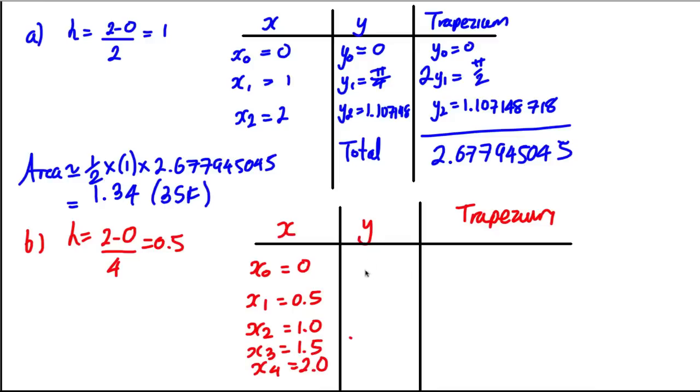So our y, in this case, is going to be y0 is going to be 0, as it was up here. And this one is going to be y2 is going to be pi by 4, as it was here. And y4 is going to be 1.107148 dot, dot, dot, as it was before. Okay, so our last column in this case y0 is still 0, y4 is 1.107148718.